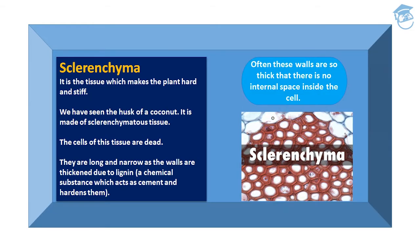Then comes sclerenchyma. It is the tissue which makes the plant hard and stiff and it is dead in nature. Unlike parenchyma, colenchyma, and aerenchyma, sclerenchyma is a dead tissue. For example, the husk of coconut is made up of sclerenchyma. The cells of this tissue are dead, long, and narrow. The walls are thickened due to lignin — a chemical substance that acts as cement and hardens them. Often these walls are so thick that there is no internal space inside the cell.